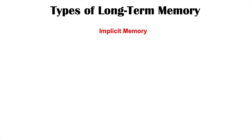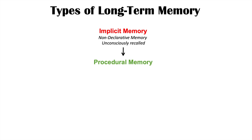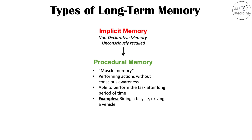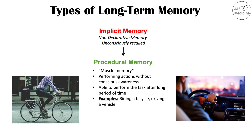Implicit memory is non-declarative memory, and this type of memory is unconsciously recalled. A key type of implicit memory is procedural memory — what we would call muscle memory — which is performing actions without conscious awareness. Procedural memory allows an individual to perform a task after long periods of time without having done it. Examples include riding a bicycle, driving a vehicle, playing the guitar, and playing the piano. Unlike explicit memory, implicit memory is not consciously recalled; it's something you can do after not having done it for a very long time without really thinking about it.